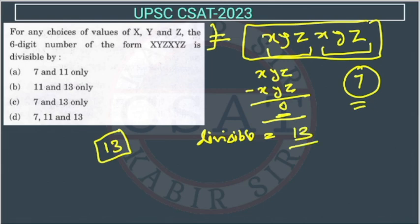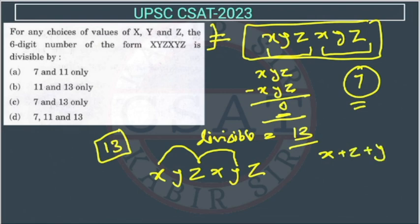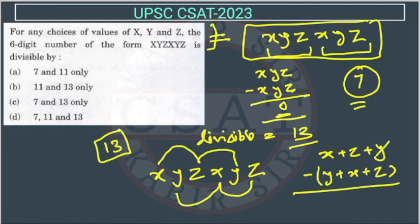This number is divisible by both these numbers. Now, because in option they have given 11 also, we have to check this number is divisible by 11 or not. So in the case of 11, suppose this number is like x, y, z, x, y, z. How we calculate the divisibility of 11? We take alternative number like this. We add them. So this will be x plus z plus y and we will add these number. This will be y plus x plus z. And then we will do the minus. If we will minus it, this y will cut this y, this x will cut this x, this z will cut this z. So this will be again zero. If this is zero, it means this number is divisible by 11 also.